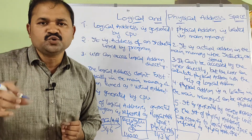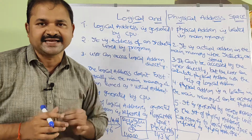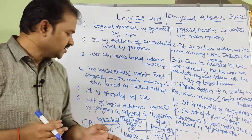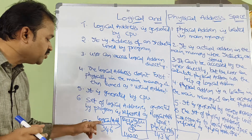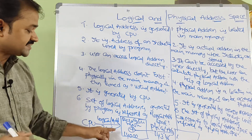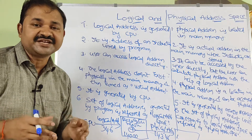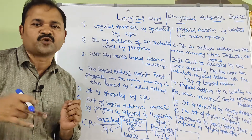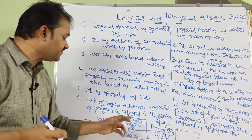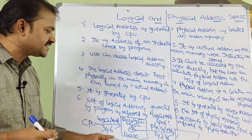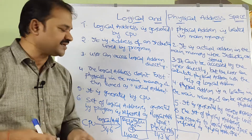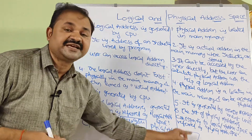The user cannot access physical address directly, but indirectly the user can access physical address with the help of the logical address. Here is the formula: CPU generates an address called the logical address — let the logical address be 346. We have a relocation register, which is nothing but the base register, holding the starting address of the process. Let the relocation register value be 14,000. Adding the relocation register value to the logical address gives us 14,000 plus 346, which equals 14,346.